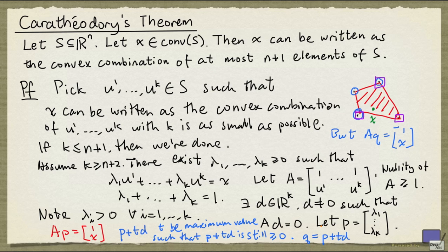Now, all the components of q are non-negative as well, but there is at least one 0 component in q, that means that there is a convex combination of fewer than k elements from S that will give us x, and that contradicts the minimality of k.